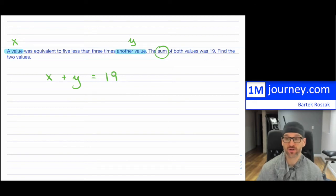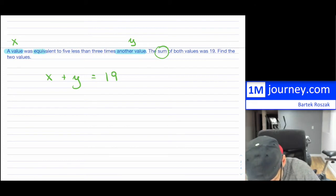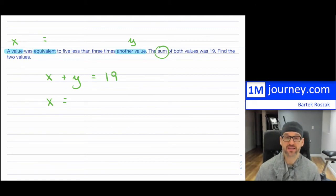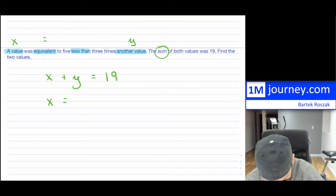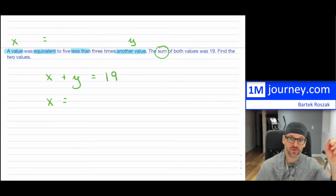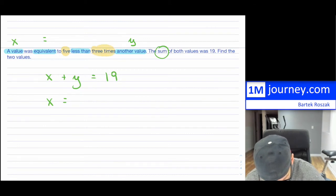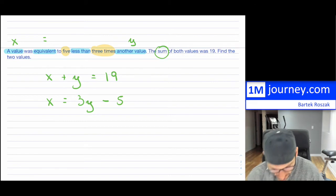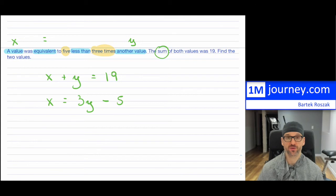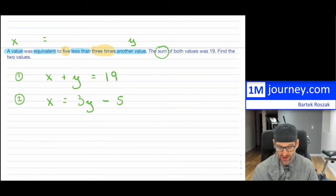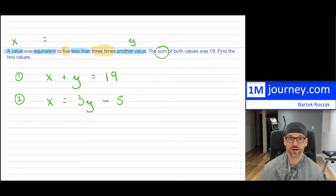Now translating the first sentence: 'a value' is x, 'was equivalent to' means equals, and 'five less than three times y' — remember that 'less than' means subtraction afterward, so it's three times y minus five. So x equals 3y minus 5. Now we have two equations and a linear system.